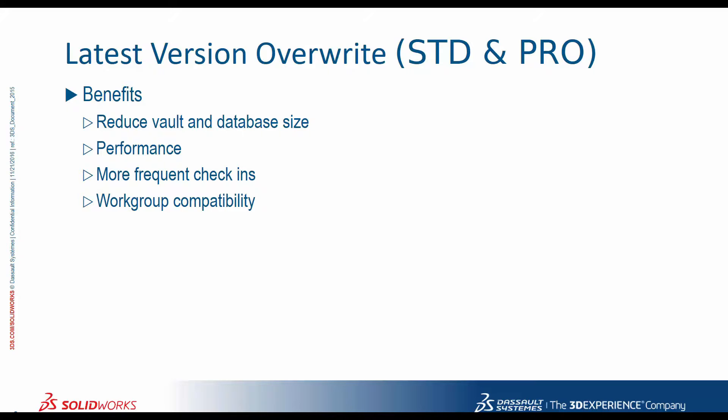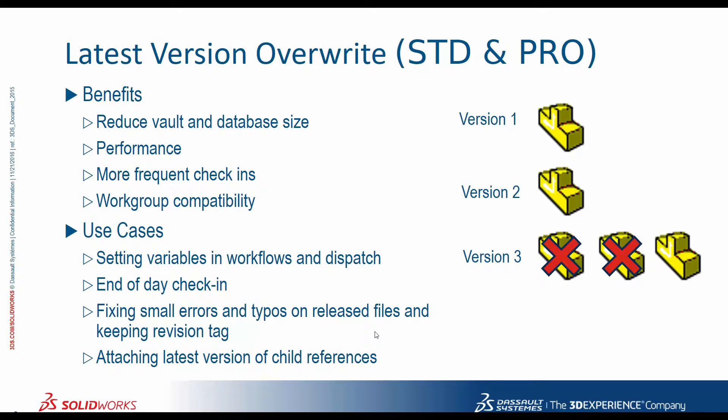A latest version overwrite is similar to what you do on your network drive. Let's say that you check in files Monday, Tuesday, Wednesday, Thursday, Friday. In the standard procedure, you would actually have a different version of the file for every day of the week — five versions, taking up basically five times the space. With the latest version overwrite, if you don't bump the version until Friday, you're only going to have one version for that entire week. The use case settings include setting variables, end-of-day check-in, and fixing small errors — really the ability to check files in without taking up a lot of archive data size.